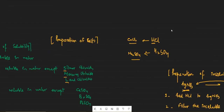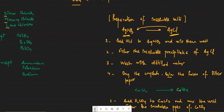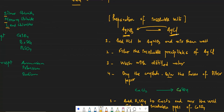Now let's talk about preparation of different kinds of salts. For insoluble salts — for example, preparing silver chloride from silver nitrate — you add HCl to AgNO3 and mix well. Silver chloride is insoluble, so you then filter the insoluble precipitates of silver chloride.